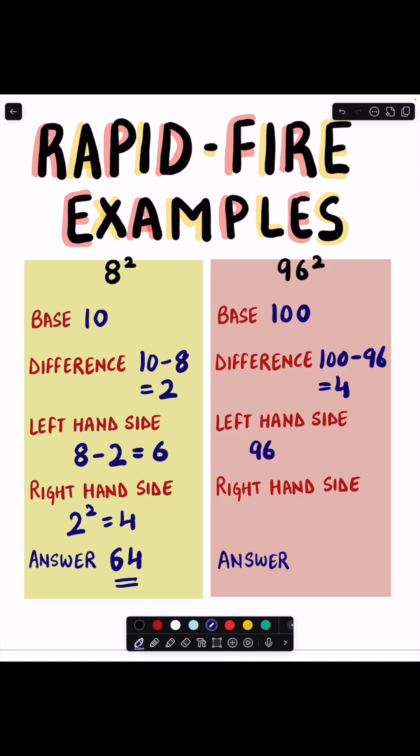So the actual number is 96 and we're gonna subtract the difference. It will give us 92 and that is the answer on our left hand side. To get the answer on the right hand side we have to square the difference which is 4. We're gonna square it and it will give us 16. And then we're gonna write it on the right hand side and our whole answer is in front of us which is 9216.